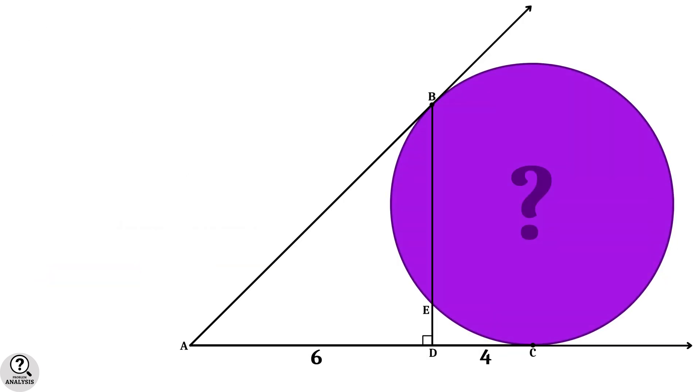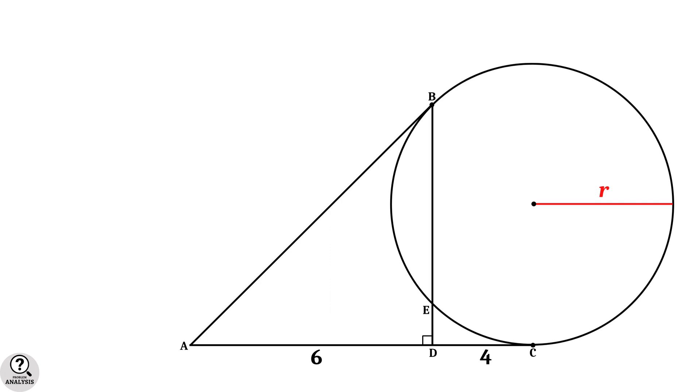Now observe the diagram. Suppose the radius of the circle is R. Then its area will be pi R square. We have to find this value. So, first we need to calculate the value of R. Now we can remove the extensions of tangents from the figure. And let's say the center of the circle is O.